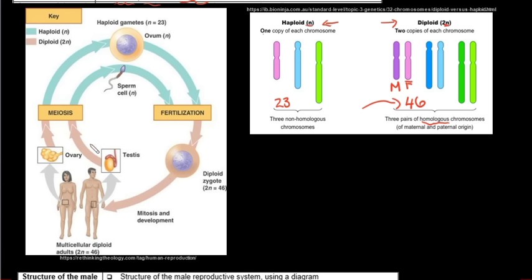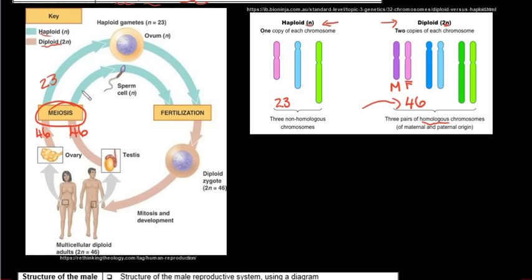Looking at the human life cycle diagram: pink represents diploid and blue represents haploid. In the female ovaries she will produce one egg cell containing 46 chromosomes, and in the male testes sperm cells are produced that also contain 46 chromosomes. If these two were to fuse directly, it would not produce 46 chromosomes — it would produce 92, which would make it not human. So they need to undergo meiosis to be halved, so the egg cell contains 23 and the sperm contains 23, so that when they fuse they produce 46, which makes it human.